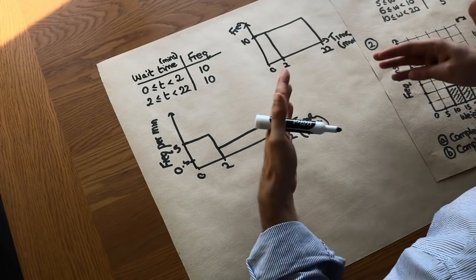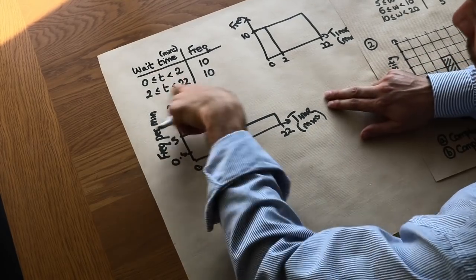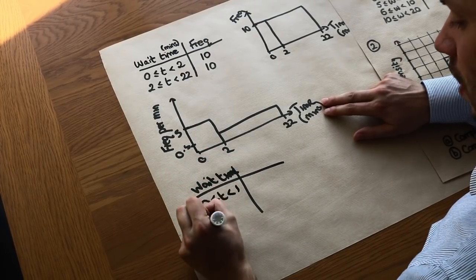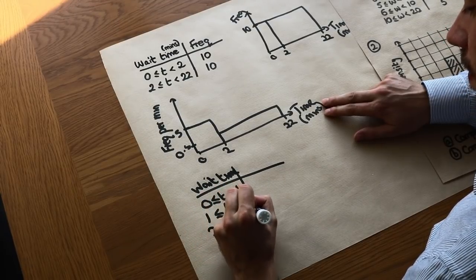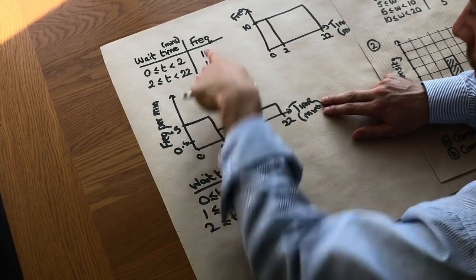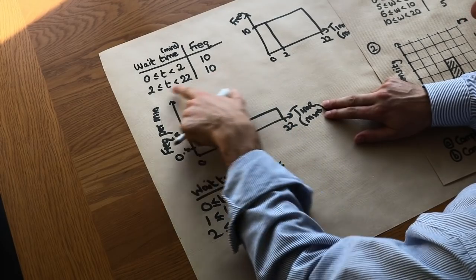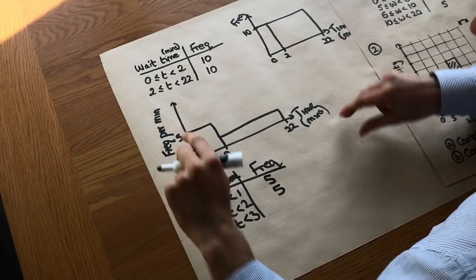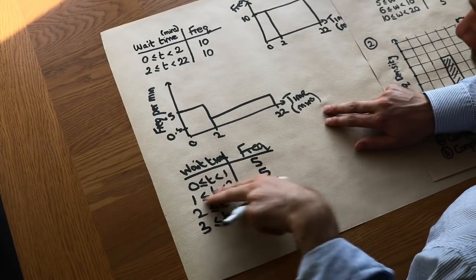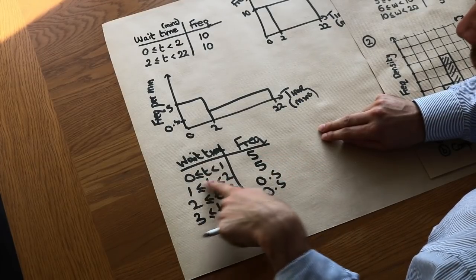Histograms are useful for showing the concentration — the distribution or shape of the data. Another way to see this: if we split the intervals into 1-minute intervals, we'd estimate 5 people each in 0–1 and 1–2 minutes, and 0.5 people in each 1-minute slot from 2 to 22. This is fairer because intervals are now equal width, letting us see the number of people per unit width.